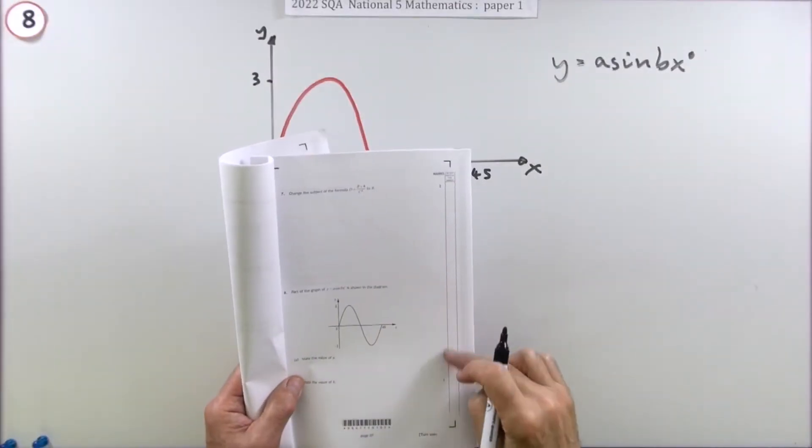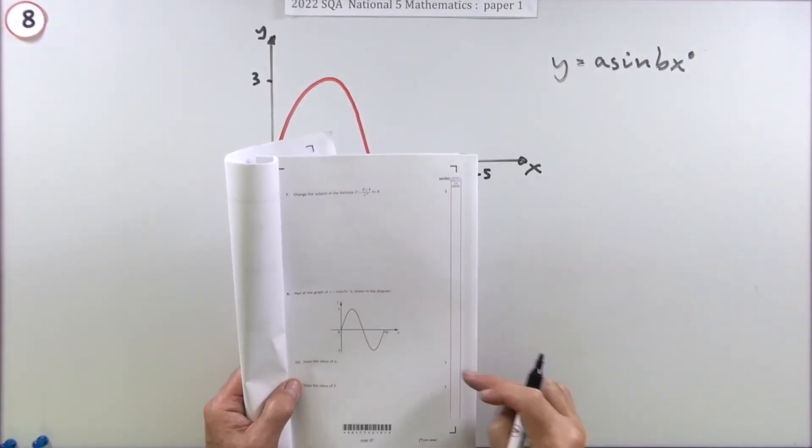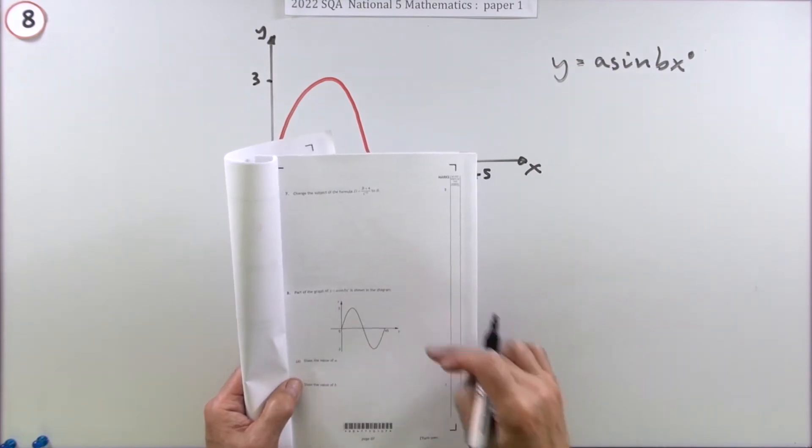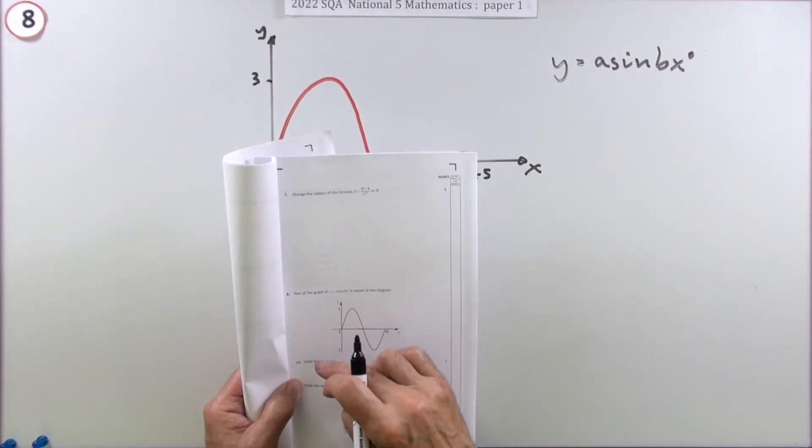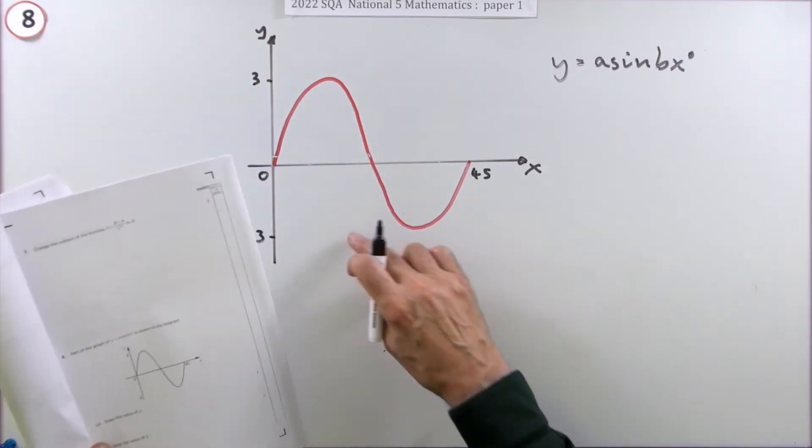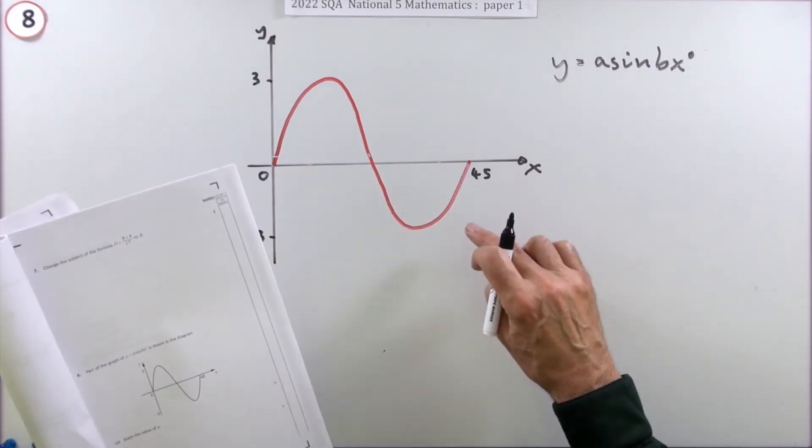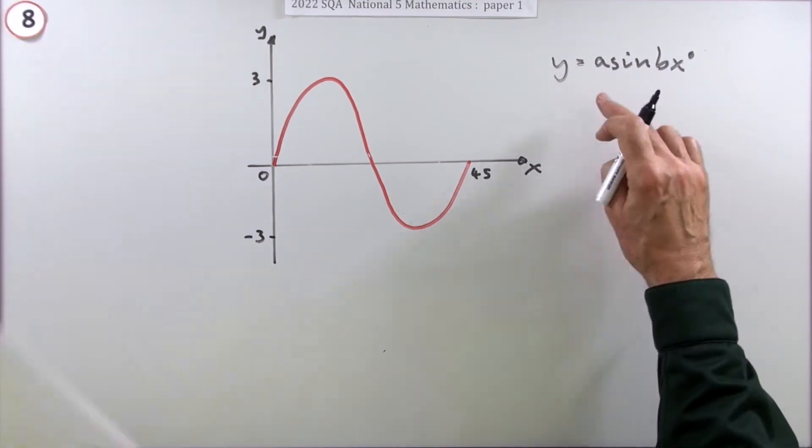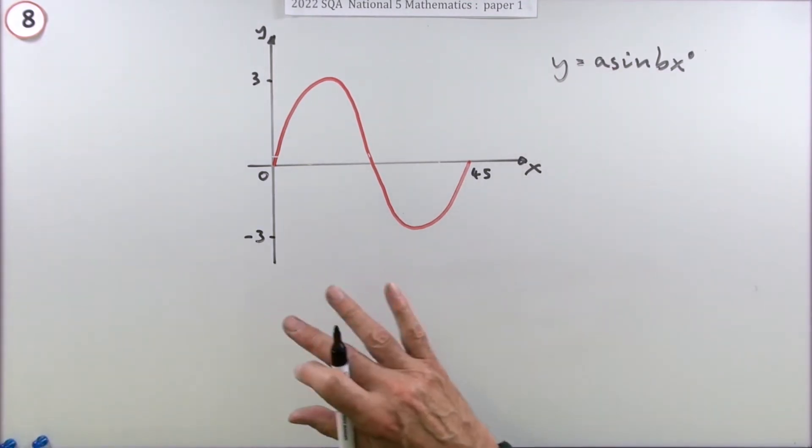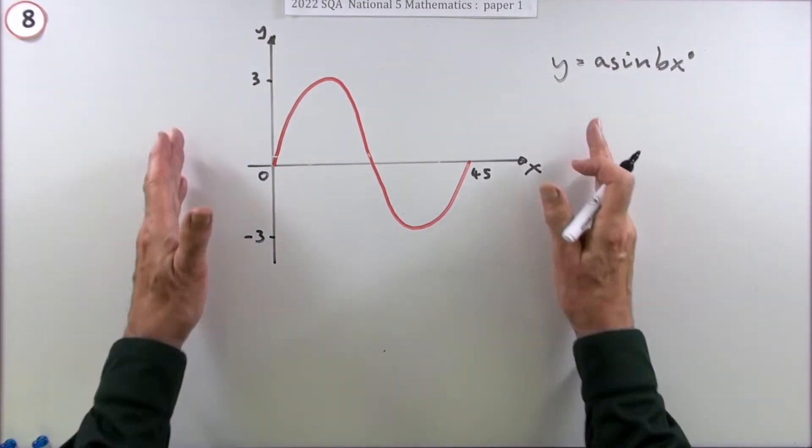Number eight then, another two mark question, just as easy as the previous question. It's two marks, one mark each just for stating a result. Part of the graph of y equals a sine bx is shown here. If that's the case, what's a and what's b for one mark each?